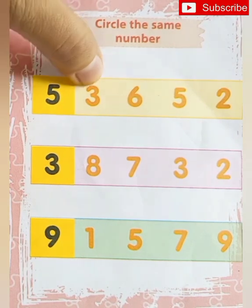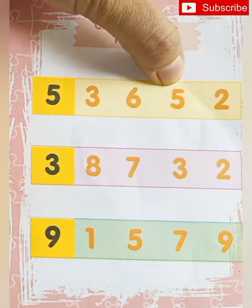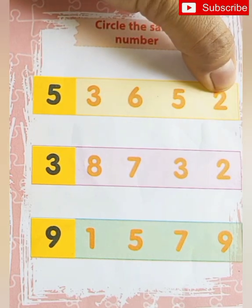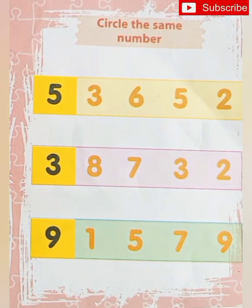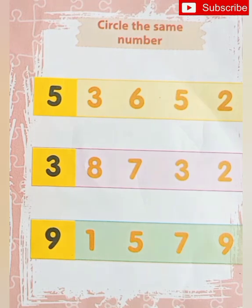This is number 5, this is 3, this is 5, this is 2. Which number are 2 times? 5, very good. It means number 5 are same, make a circle on number 5.